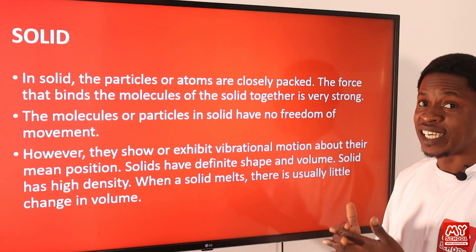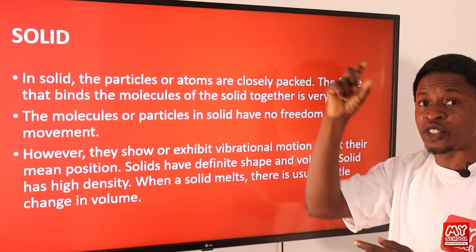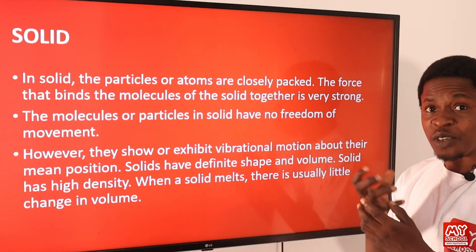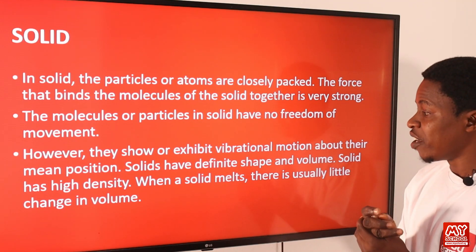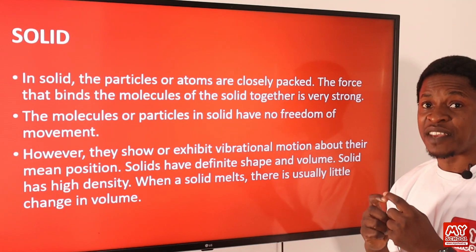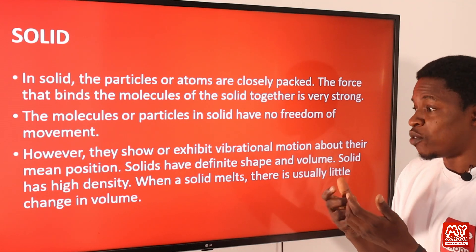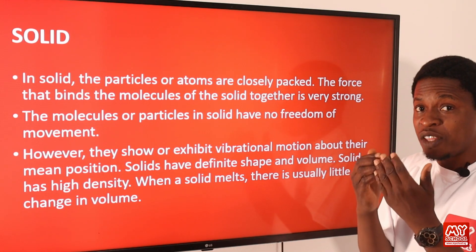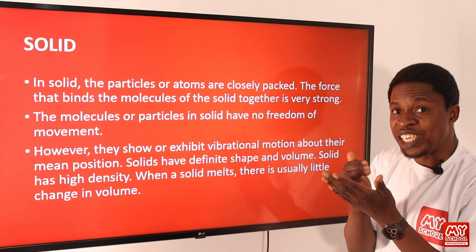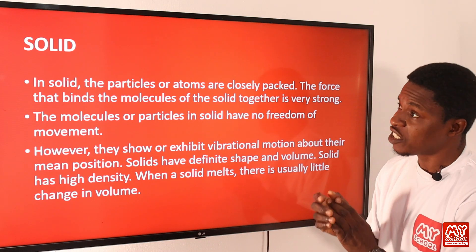Solid substances have high density. Density is the ratio of the mass of a substance to the volume it occupies, and their densities are usually high because of their masses. When a solid melts, there is usually little change in volume. For instance, if you have candle wax and then you melt it, there is a change in volume, but just a slight change actually occurs.